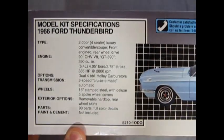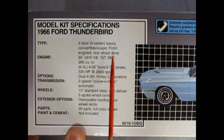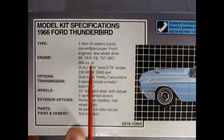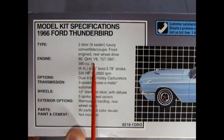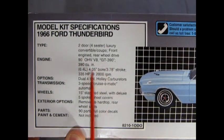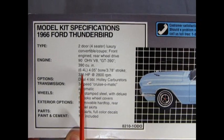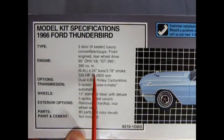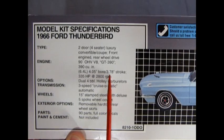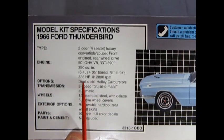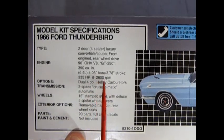For example, it says it's a two-door, four-seater luxury convertible coupe, front-engine, rear-wheel drive. The engine is a 90-degree overhead valve V8, GT390, 390 cubic inch, which is 6.4 liters, a 4.05 bore, and a 3.78 stroke. 335 horsepower at 2,800 RPM.